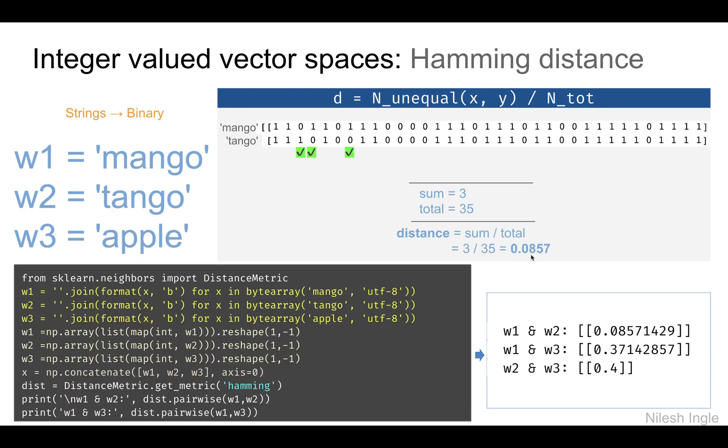In another example, we can use Hamming distance to calculate distance between different words. Let's say we have three words: mango, tango, and apple. If we convert these strings to binary, we get an array as shown here on the right. For tango we get this particular binary array.